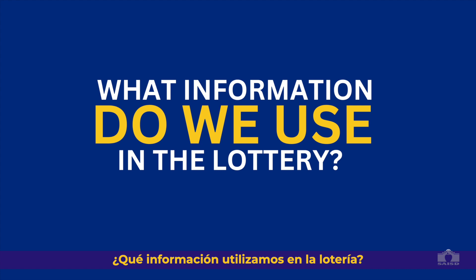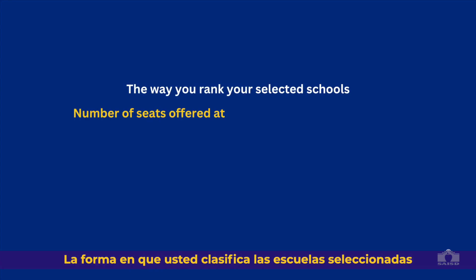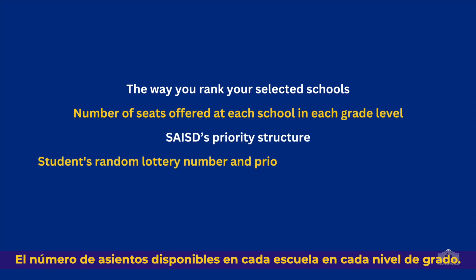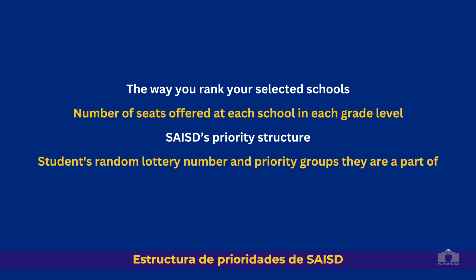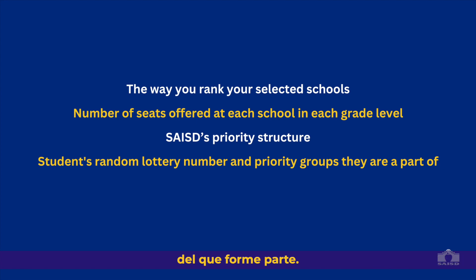What information do we use in the lottery? Considerations for this process are the way you rank your selected schools, the number of seats available at each school in each grade level, SAISD's priority structure, your student's random lottery number, and any priority groups they are a part of.